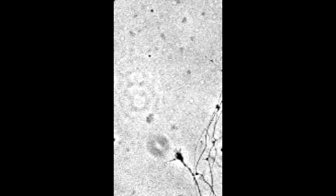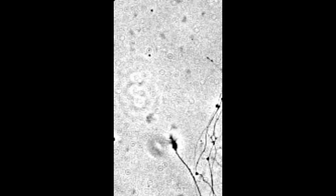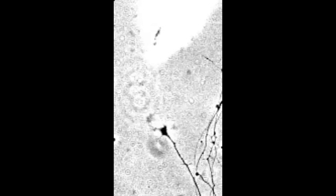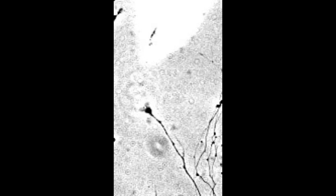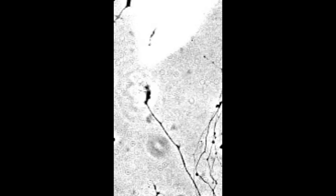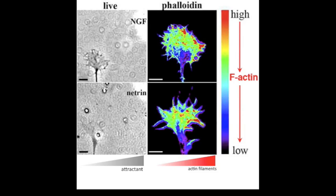In this video, a growth cone turns towards a glass pipette that releases a soluble attractant. The growth cone spreads robustly towards the pipette. Again, a growth cone turns towards a gradient of a soluble attractant. Actin filaments are preferentially formed towards the source of the attractant. This local actin assembly creates a high actin filament density in the growth cone region closer to the source of the attractant. Cool colors, blue and green, indicate low actin density, while hot colors, red and orange, mean high actin density.